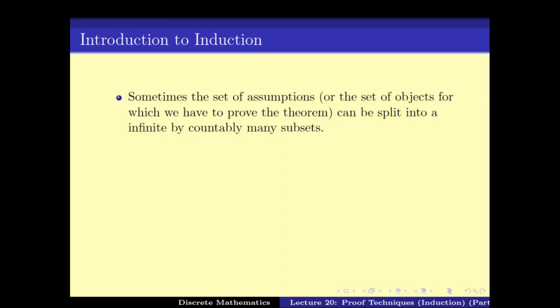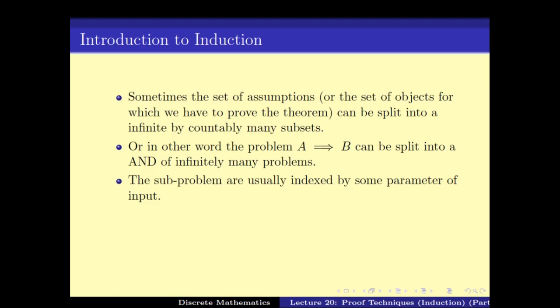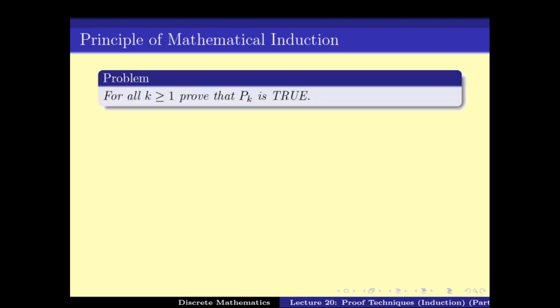The idea is that if you have a problem, we can split up the assumptions into a possibly infinite number of subsets, and this will in turn split the problem into an AND of infinitely many sub-problems. Usually the sub-problems get indexed by some parameter of the input, and thus the problem 'A implies B' looks like P1 and P2 and so on till infinity. The problem becomes: for all k, prove that Pk is true.